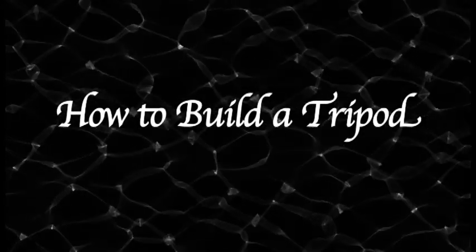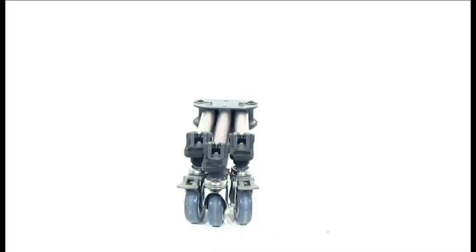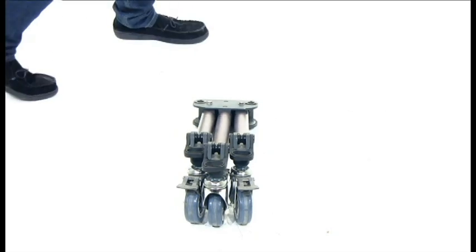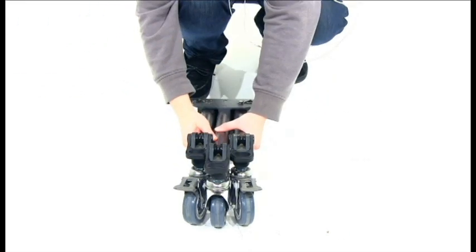How to build a tripod. Step 1: The first thing you want to do is set up the dolly. Spread the two shorter legs of the dolly out until they snap into position.